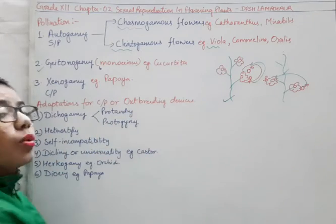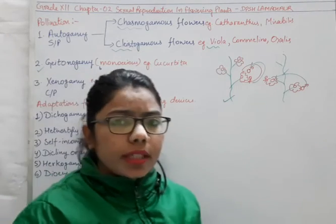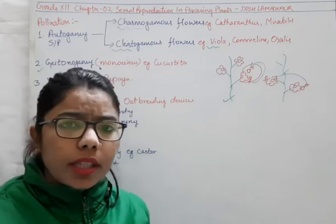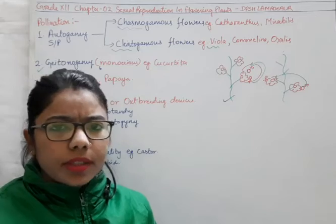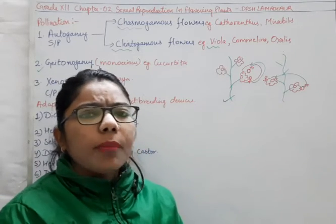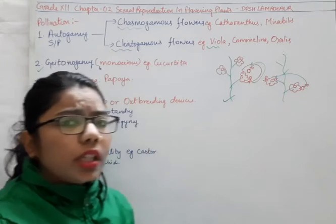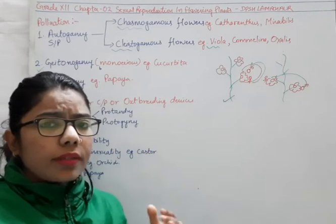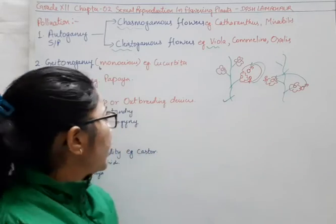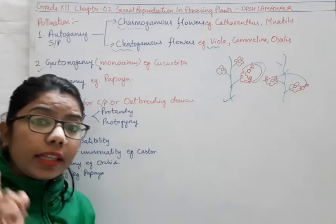Example: Cucurbita — meaning in the family of Cucurbitaceae, like bitter gourd, bottle gourd, or pumpkin — you can see that both types of flowers are present on the same plant. Maize is another example where the male as well as female inflorescence is present on the same plant. So examples are of monoecious flowers.